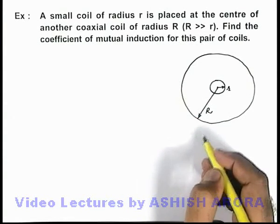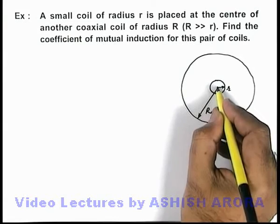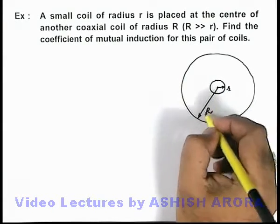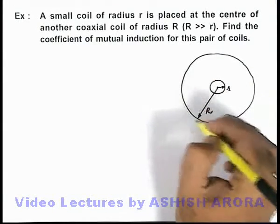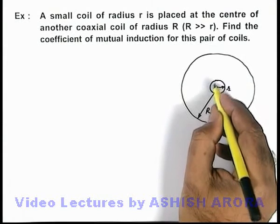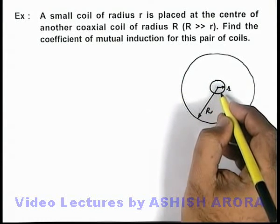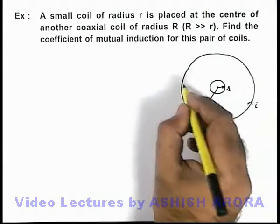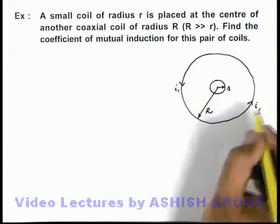And in this situation as the inner coil is very small we can assume that the magnetic induction due to a current in outer coil will remain almost constant through the smaller coil.